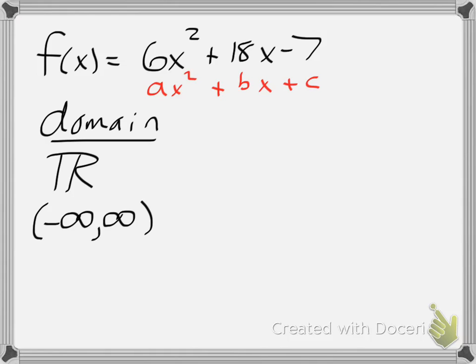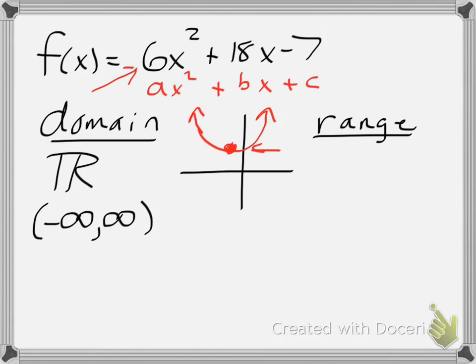To find our range, we want to identify what is the highest or lowest point on this graph. Considering this is a quadratic function, the graph is that of a parabola and has the basic shape of something like this. We look at our leading coefficient, which in this case is a positive 6. Positive means it opens up, so this is a minimum value.